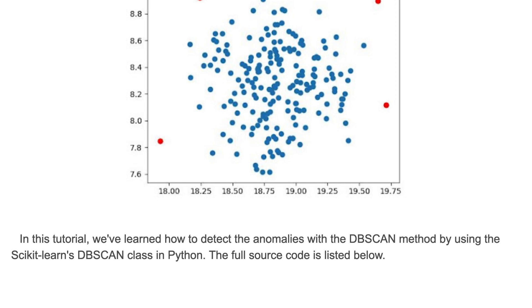That's it for this tutorial. In this tutorial, we learned how to detect the anomalies with DBSCAN class by using the scikit-learn's DBSCAN.